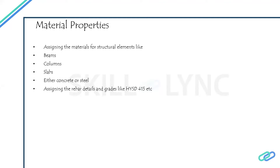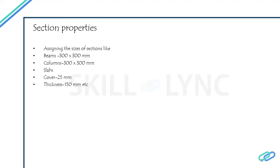After feeding the basic material properties of the members to be analyzed, next comes the section properties. In the section properties, we define the sectional dimensions of the assigned members. For beams, let us assume 300 by 300 mm; for columns, 300 by 300 mm. For the slab, we mention the cover thickness as 25 mm and the slab thickness as 150 mm. These are the basic parameters fed in the section properties.